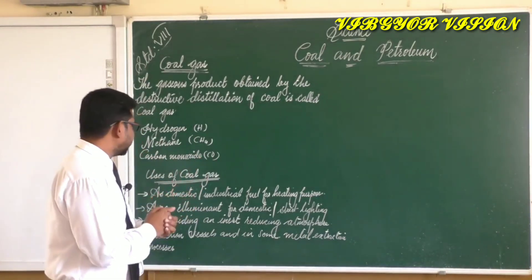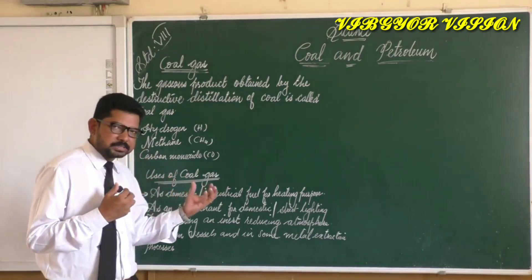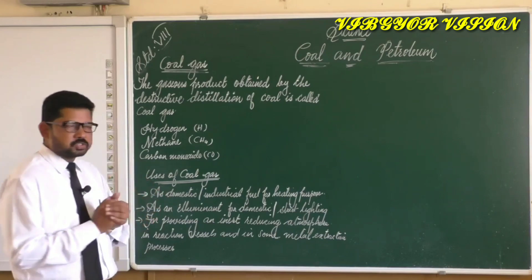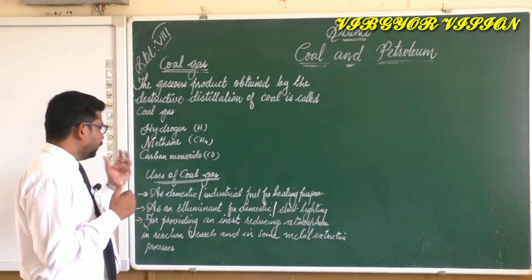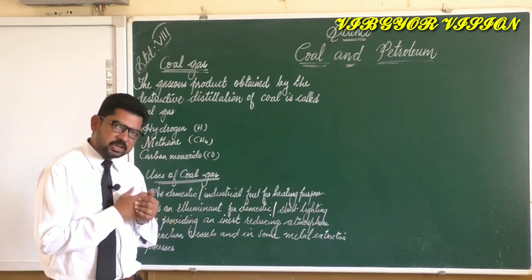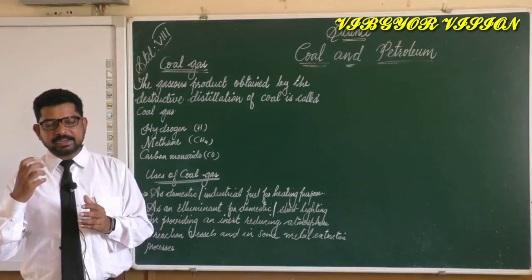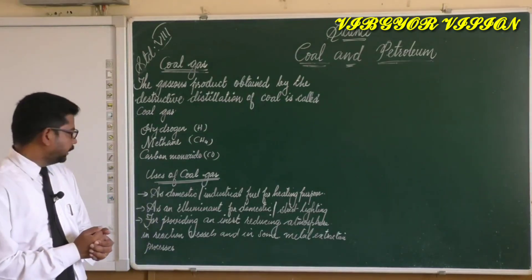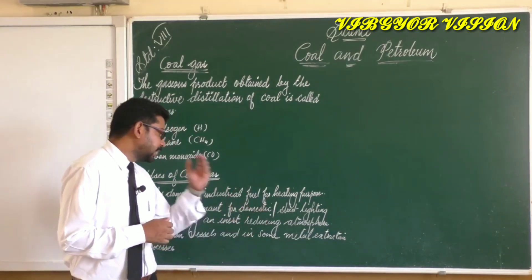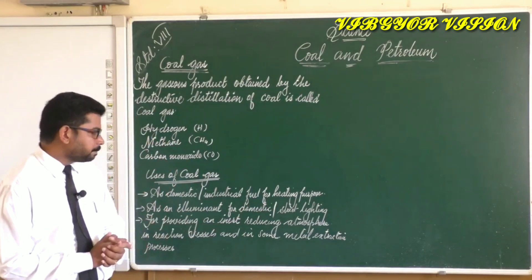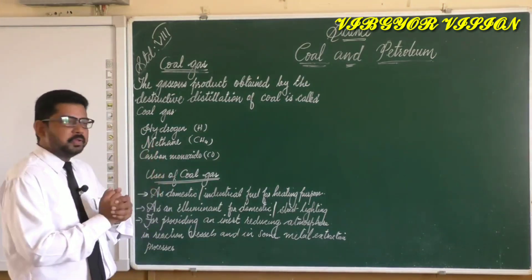Now let us study the uses of coal gas. First, it is used as a domestic or industrial fuel for heating purposes. Second, it was used as an illuminant for domestic or street lighting before electricity became widely available. Third, it is used for providing an inert reducing atmosphere in reaction vessels and in some metal extraction processes.